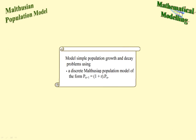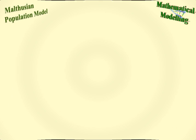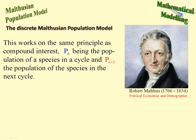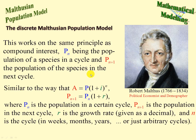So this is the first of our models. Robert Malthus lived in the 18th century, a political economist, and he was particularly interested in population numbers, both humans and animals. The model is very similar in principle to compound interest — Pn being the population of a species in a cycle, and Pn+1 the population of the species in the next cycle.